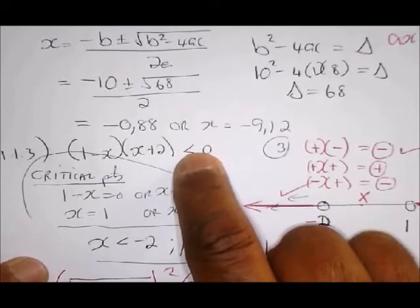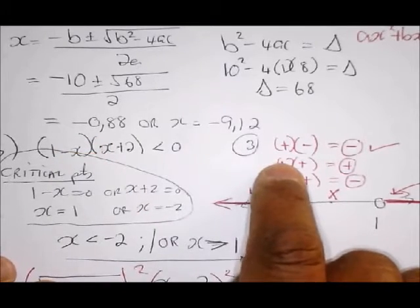So what you do is, take a value to the left of negative 2, like a negative 3, for instance, and substitute into here. If I put a negative 3 in there, I get a positive answer. If I put a negative 3 in there, I get a negative answer. Multiply the 2, positive times negative is a negative, which is less than 0. So it does satisfy the equation. Take a value now between negative 2 and 1, like 0, for instance. If I put 0 in there, I get a positive value. If I put 0 in there, I get another positive. If I multiply two positives, I get another positive. That is not correct. I want something which is negative. So therefore, that does not satisfy the equation.